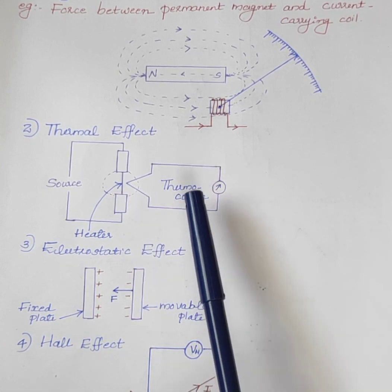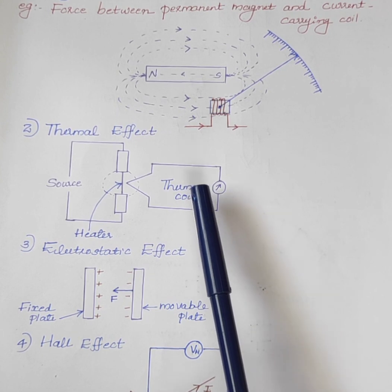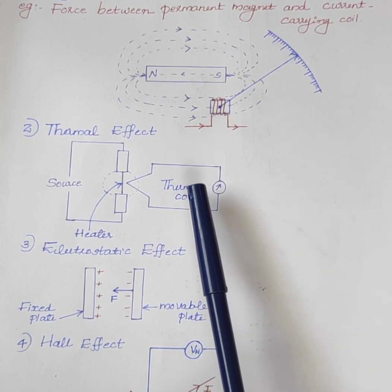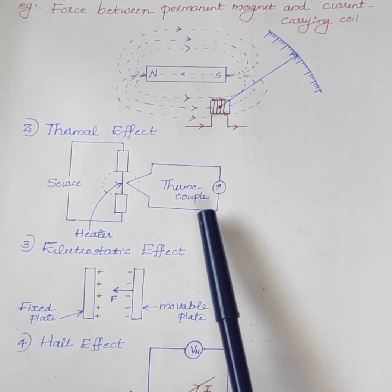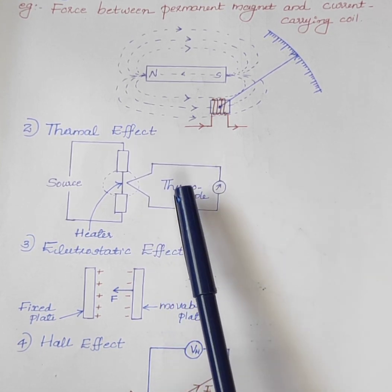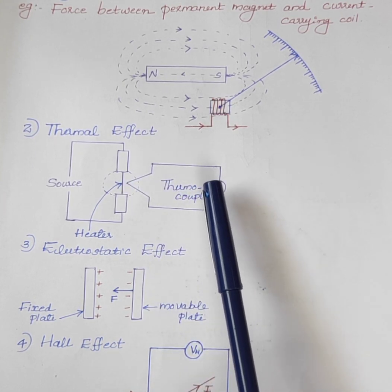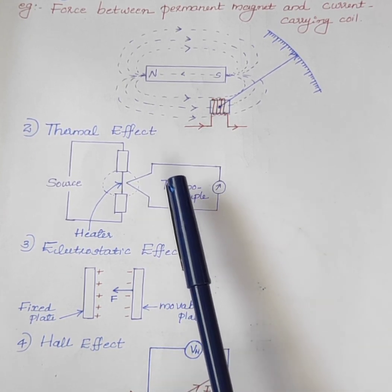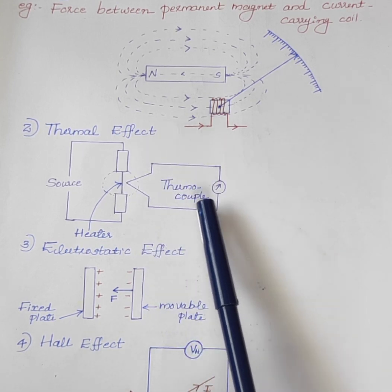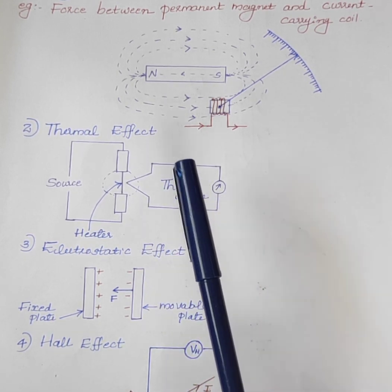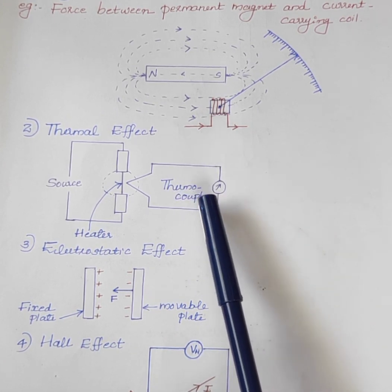A thermocouple consists of two dissimilar conductors joined at the ends to form a closed loop. If the junctions of the two dissimilar metals are maintained at different temperatures, a current flows through the closed loop. This current can be measured with the help of a meter.